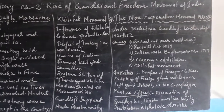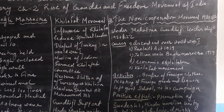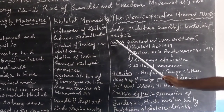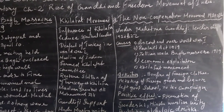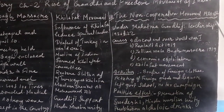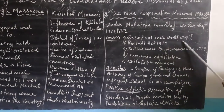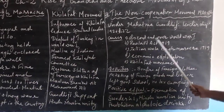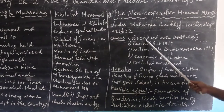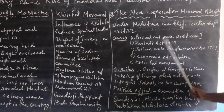Now let us look at the second key point — the Non-Cooperation Movement of 1920 to 1922. This Non-Cooperation Movement was under Mahatma Gandhi's leadership. These are some of the causes: First, discontent over World War One — the British promised Indians that if they supported the war, they would be given independence, but later they did not do that. They cheated us. Second reason was the Rowlatt Act of 1919, which we already discussed.